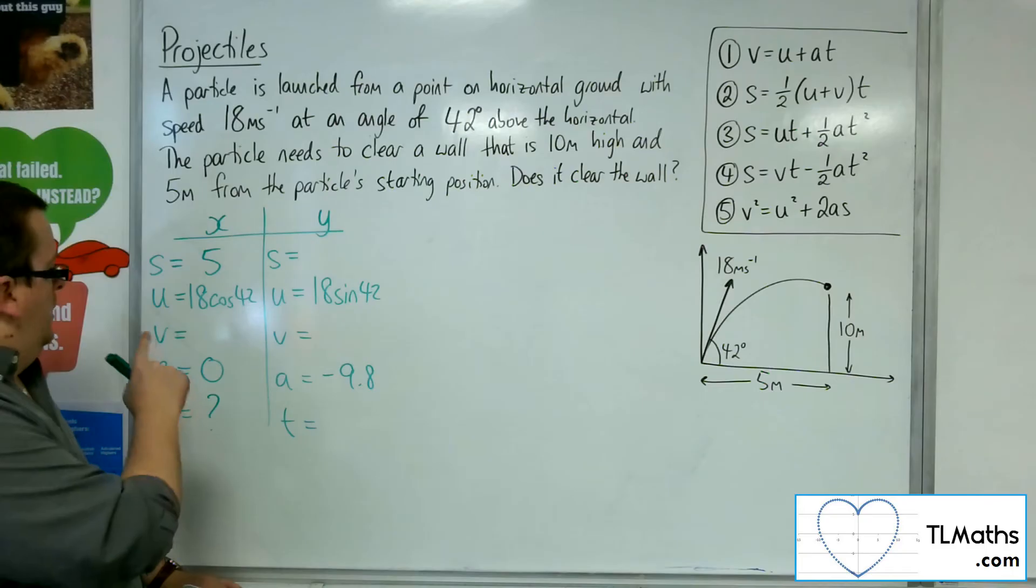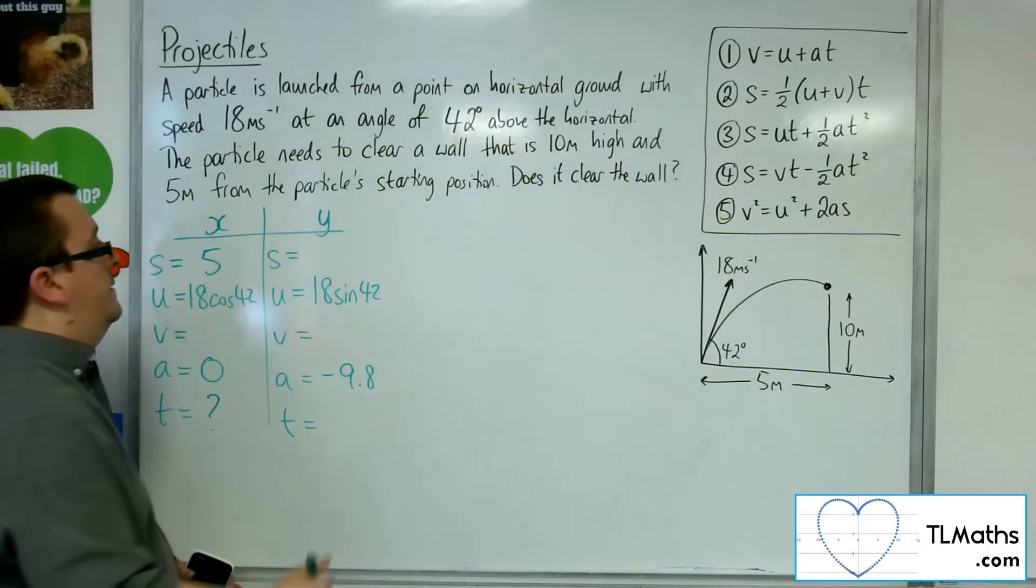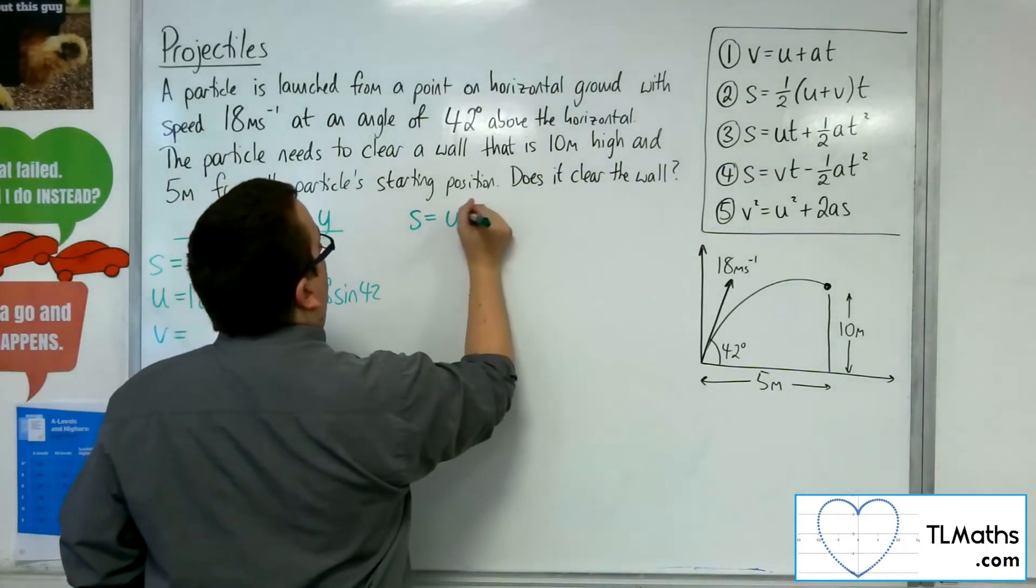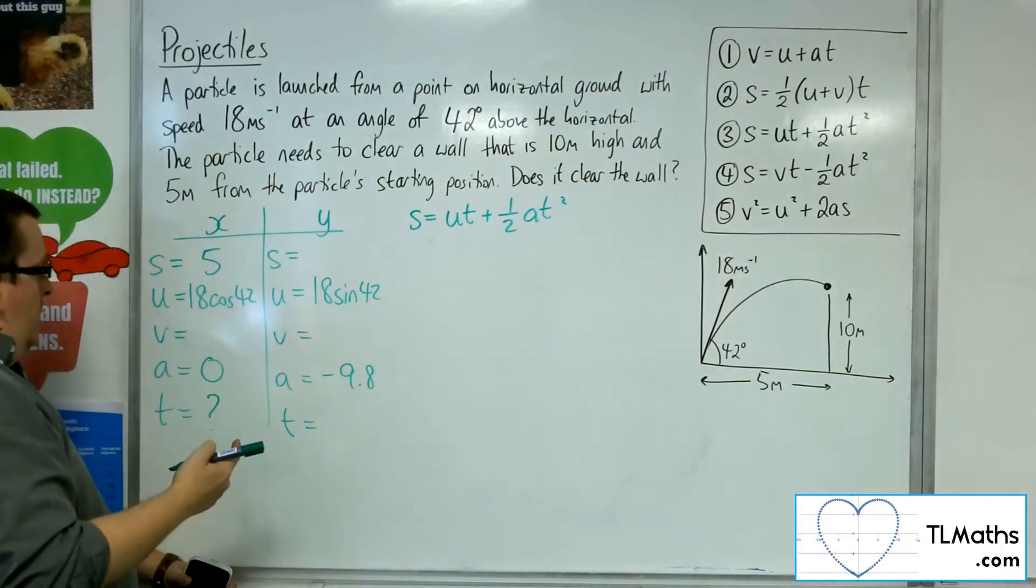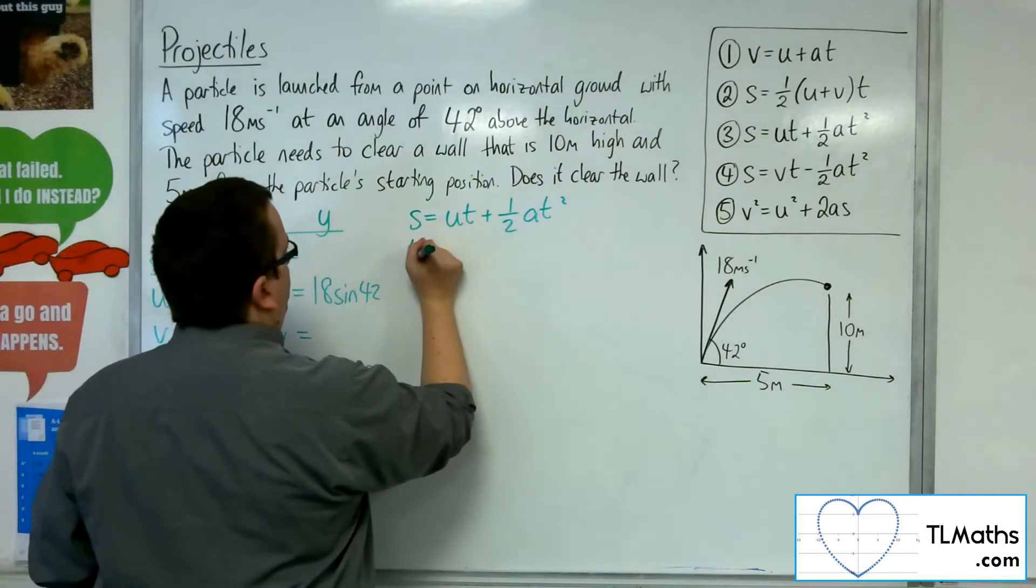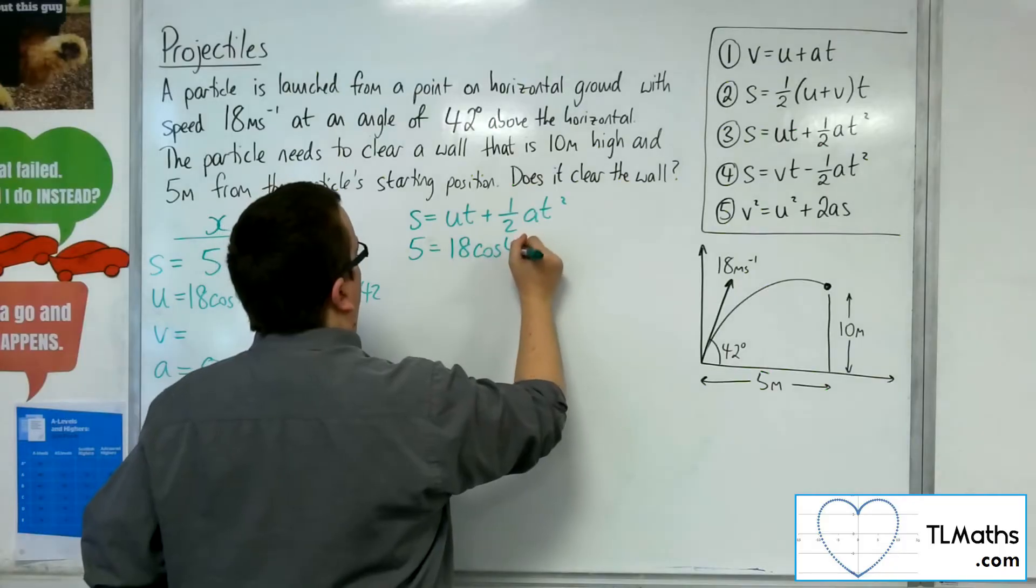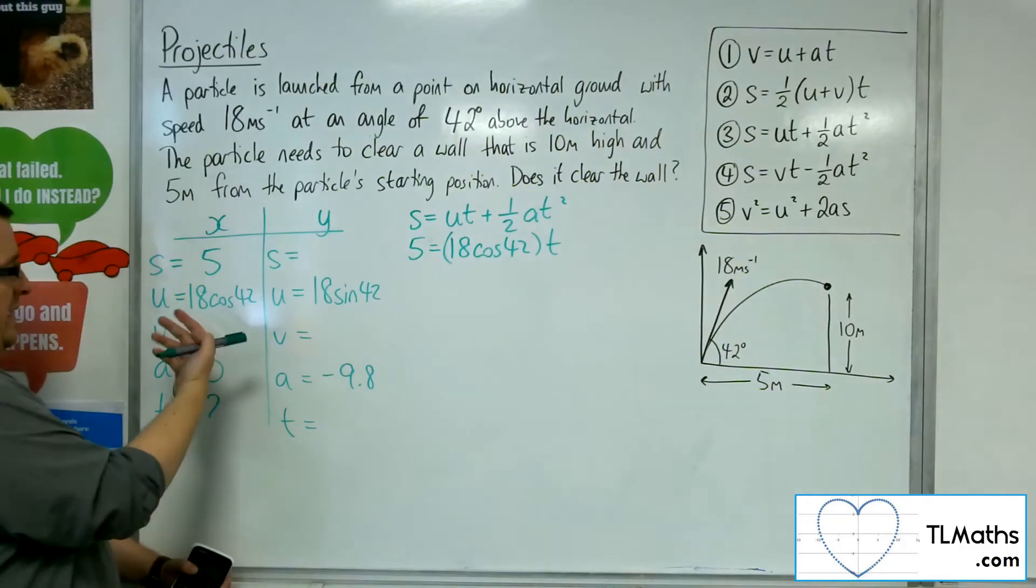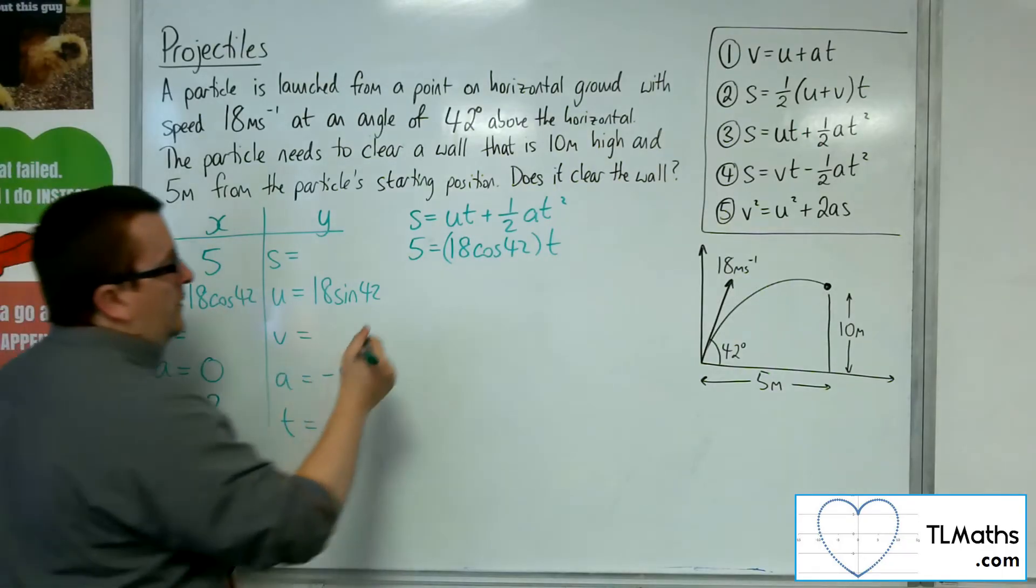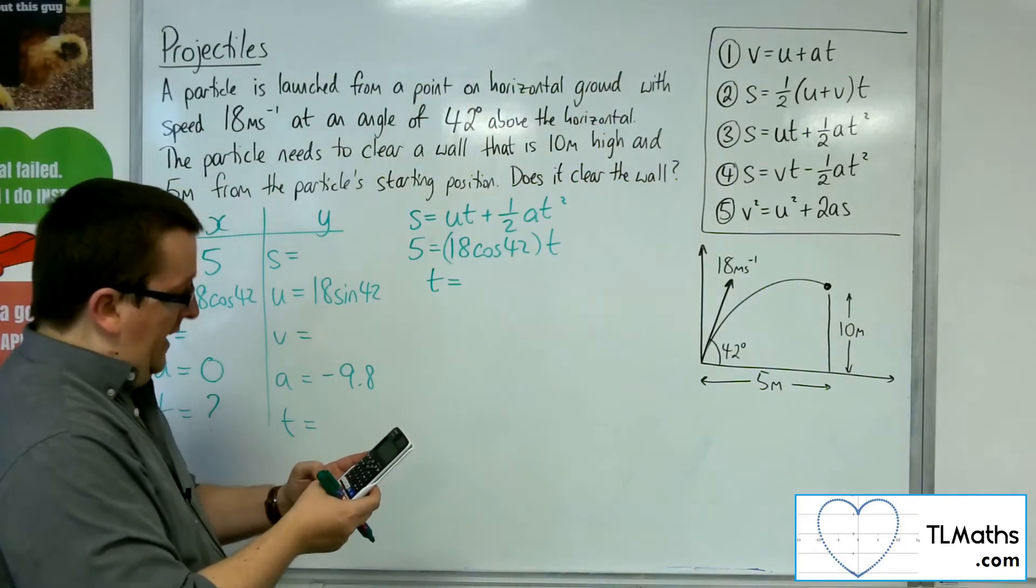Looking for an equation that has time but doesn't have velocity, and that leads me to number 3 again. So S is equal to UT plus 1 half AT squared. Now, the S is 5, the U is 18 cos 42, and the T is what I want to find. The A here is 0, so the half AT squared can go.